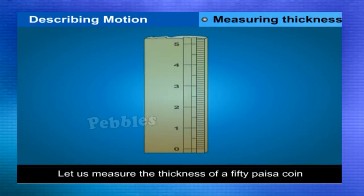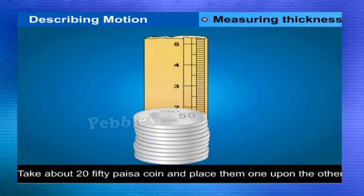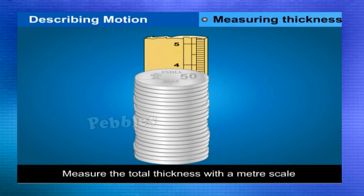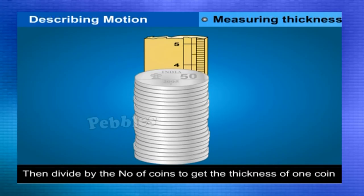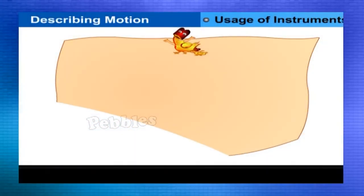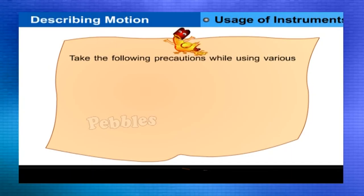Let us measure the thickness of a 50 paisa coin. Take about 20 fifty paisa coins and place them one upon another as shown in the figure. Measure the total thickness with a meter scale and then divide by the number of coins to get the thickness of one coin.